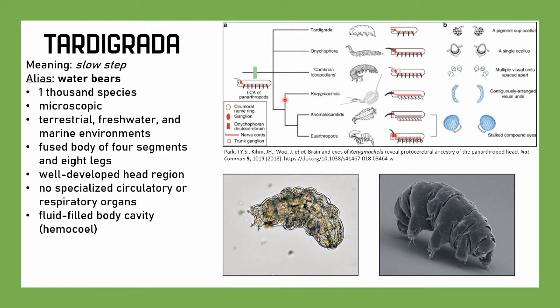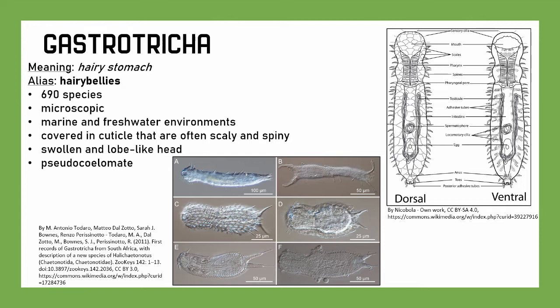Dusting off here, we have Gastrotricha. It means 'hairy stomach.' They're funnily called hairy bellies. There are 690 species. They're microscopic, found in marine and freshwater environments. They're covered in a cuticle that's often scaly and spiny — so they often look hairy. They have a swollen, lobe-like head, and they are pseudocoelomates, sort of like some of the nematodes.